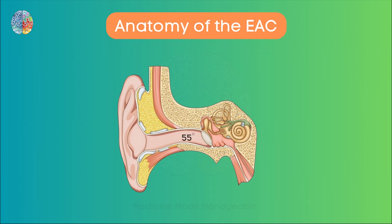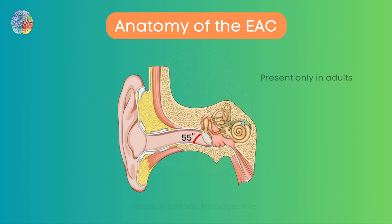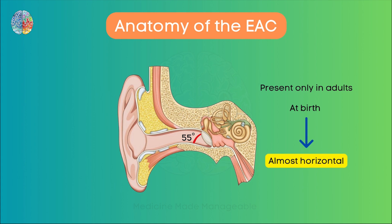The tympanic membrane is at an angle of 55 degrees with the floor of the EAC. Due to this, the floor of the EAC is a bit longer when compared to the roof of the EAC. Now this angle of 55 degrees is present only in adults, because at birth it is almost horizontal.